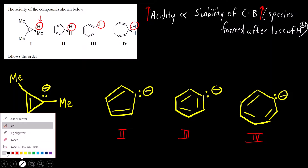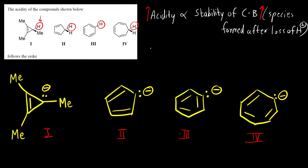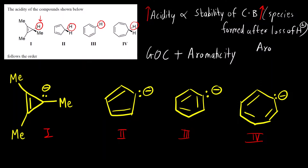This question is based on two things: acidity — a concept of GOC — plus aromaticity, since you can see all the compounds are cyclic. So this is a topic of aromatic compounds. Aromatic compounds and aromatic ions are most stable.